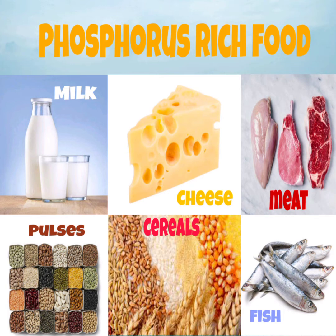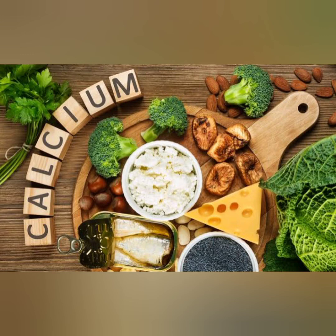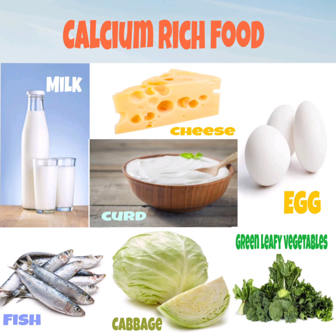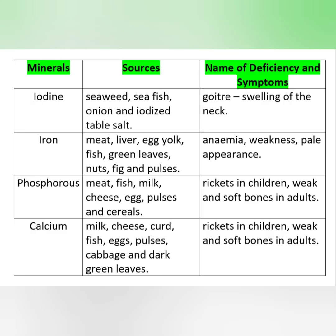Next is calcium, which is also very important. The lack of calcium in our food also causes weak and soft bones — we can call this rickets. We should take foods like milk, cheese, curd, fish, egg, cabbage, and dark green leafy vegetables. Calcium and phosphorus together build our bones and teeth, giving us strong bones and teeth when taken in the proper amount.